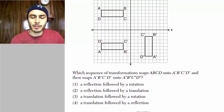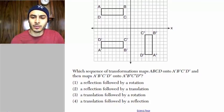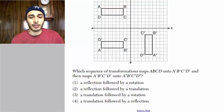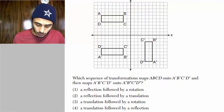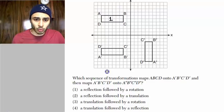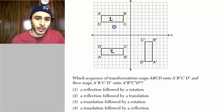Which sequence of transformations maps ABCD onto A prime, B prime, C prime, D prime, and then maps A prime, B prime, C prime, D prime onto A double prime, and so on. Basically, look, we start off with this image one. And then we get this image, image two. How did we go from image one to image two?